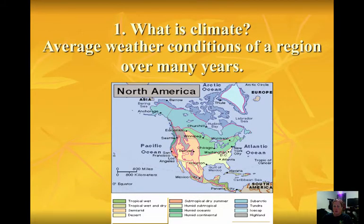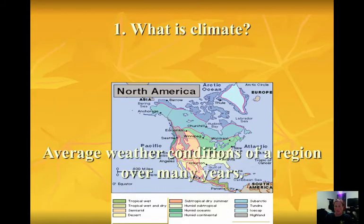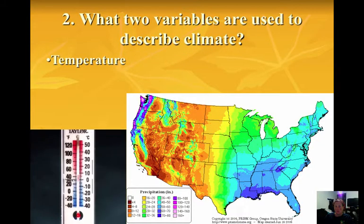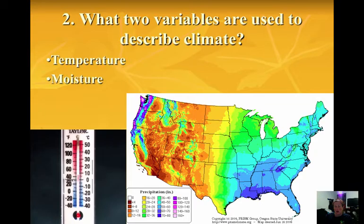So what is climate? Different from weather, climate is the average weather conditions of a region over many years. We compare long-term weather patterns to come up with the general climate for an area. Two variables we need to describe climate are temperature and moisture — whether the area is warm or cool, and whether the area is dry or wet.